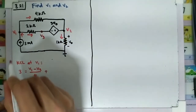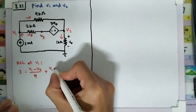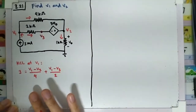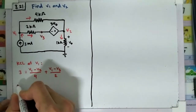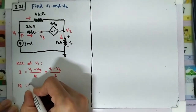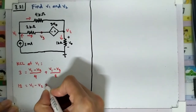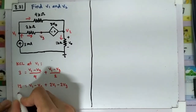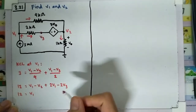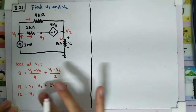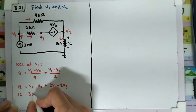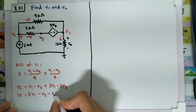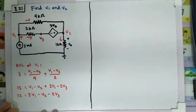We also have this current — let's name this node v3 — so we add v1 minus v3 divided by 2. Multiplying both sides by 4, we get: 12 equals v1 minus v2 plus 2v1 minus 2v3, which simplifies to 12 equals 3v1 minus v2 minus 2v3.